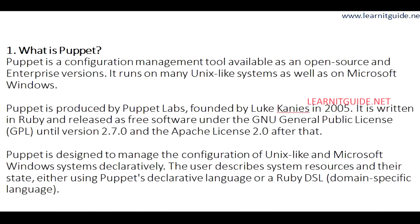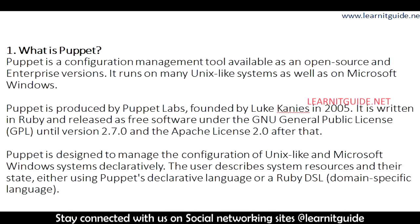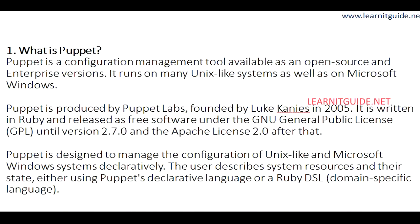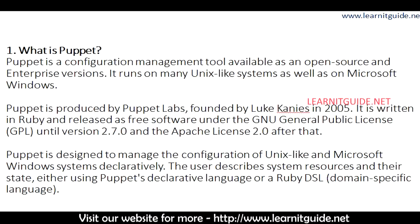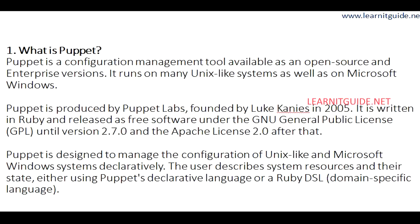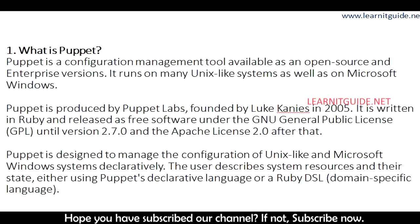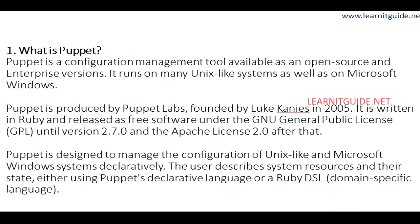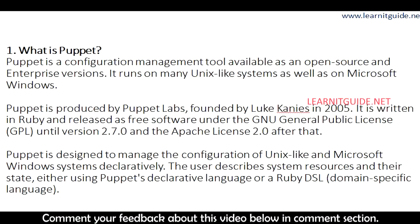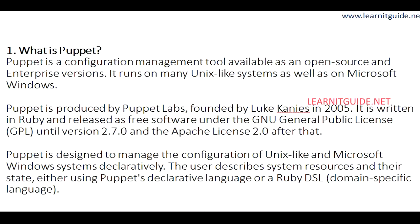After version 2.7.0 it has been released under Apache license 2.0. Basically Puppet is designed to manage the configuration of Unix-like and Microsoft Windows systems declaratively. The user describes system resources and their state using either Puppet's declarative language or a Ruby DSL language.